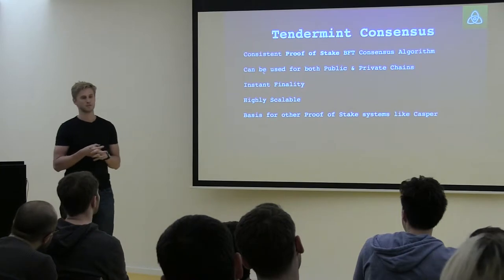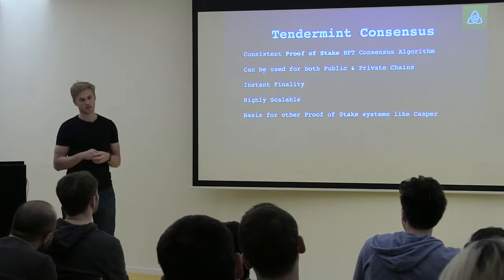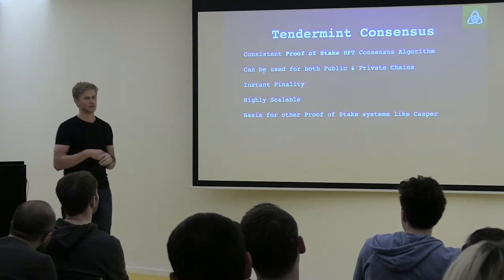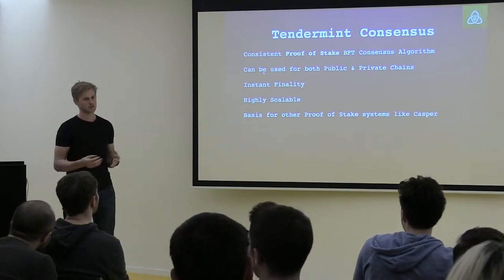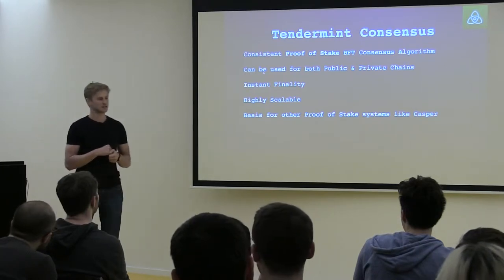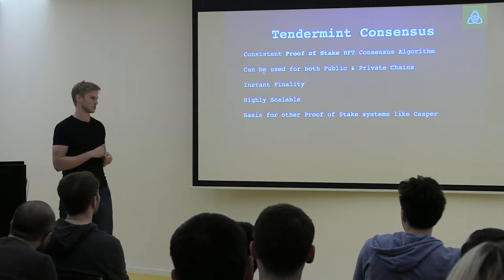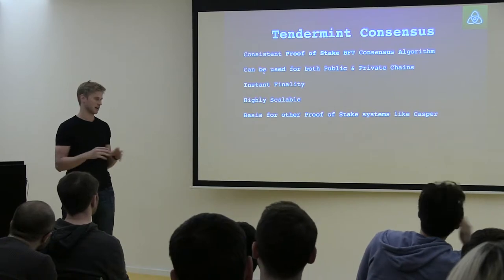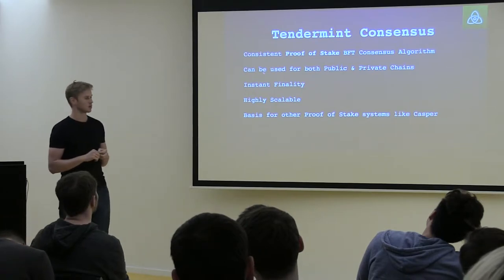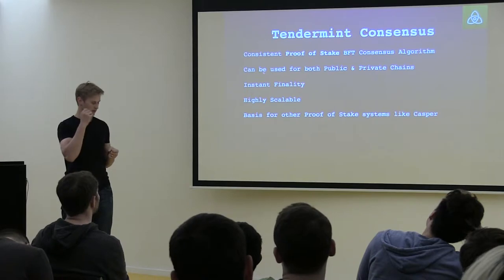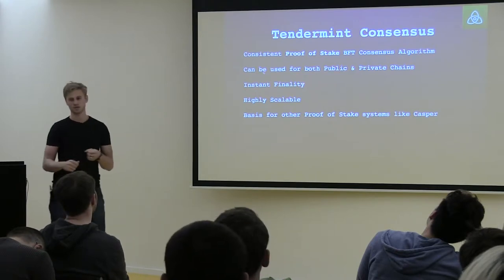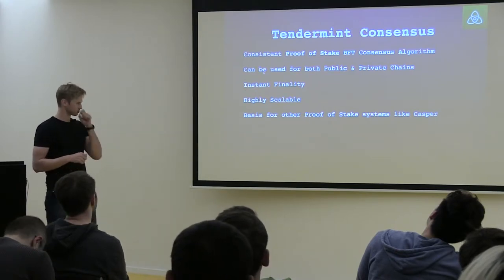Tendermint is suitable for both public and private chains. For private chains it's been used for a while in the proof-of-concept environment that many private projects are at. For public chains, this is what we're now working on with Cosmos. Tendermint works with validators that have different weights based on how many tokens they have. Let's say there are 10 validators all with 10 tokens — they all have equal voting weight. A block gets proposed, passed around, validators vote, and as soon as more than two-thirds vote yes, the block is committed and finalized.